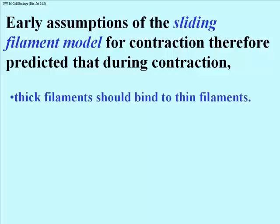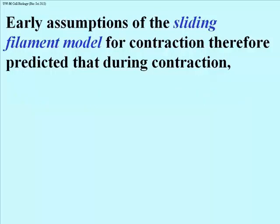Early assumptions from a sliding filament model for contraction — a model in which shortening of sarcomeres is presumed to be due to actin sliding against myosin — would lead to some predictions. Specifically, during contraction, thick and thin filaments should bind to one another, which makes eminent sense if you're going to use that sliding to pull the Z-lines closer to one another.